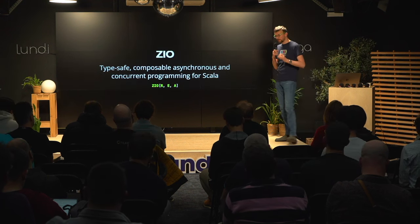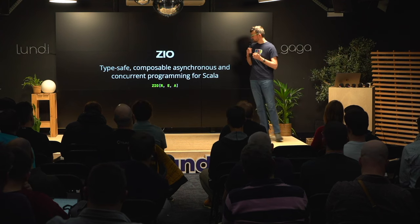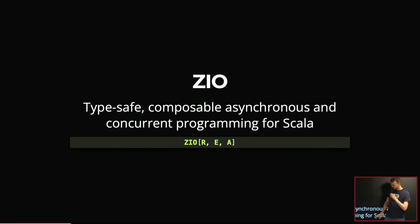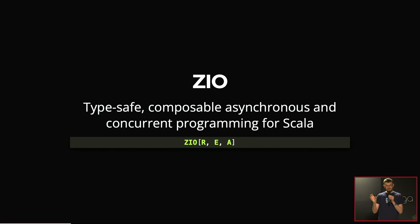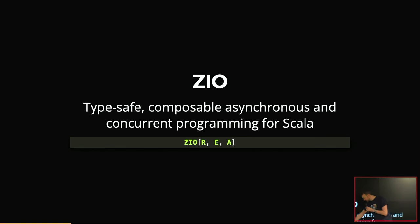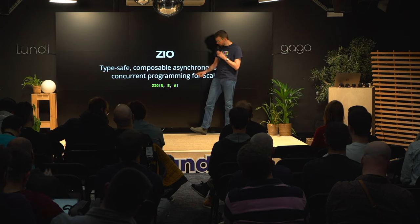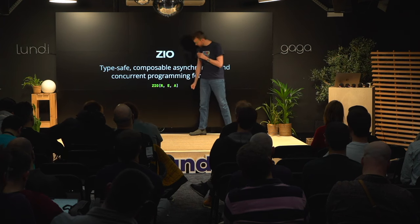ZIO is a type-safe, composable, asynchronous, and concurrent programming runtime for Scala. The central concept in ZIO is the ZIO data type — a lazily-evaluated description of some computation. Nothing happens when you create these descriptions until you pass them to some kind of evaluator. It has three type parameters: the environment (dependencies needed to run your program), the errors your program might produce, and the value returned by your code.